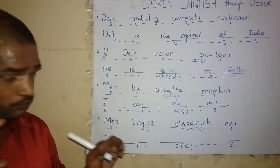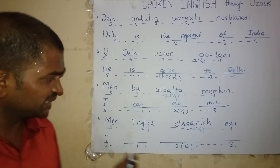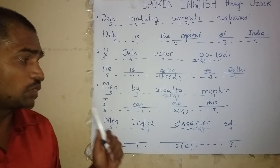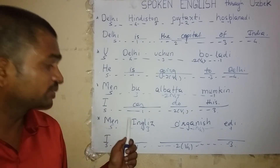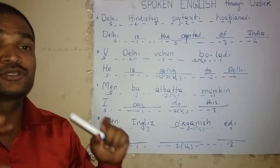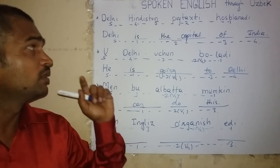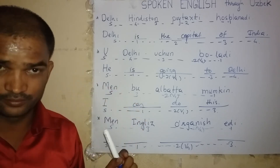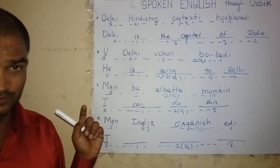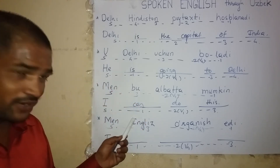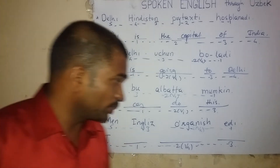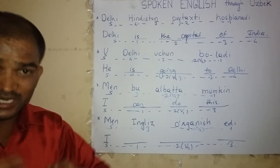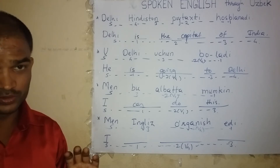Now, you should look at this Uzbek sentence — Men, English, organic, chidi — and while looking at it, try to speak the sentence in English again and again, about 100 times. While trying orally, there is a comment box below this video. Try to type the sentence in the comment box.